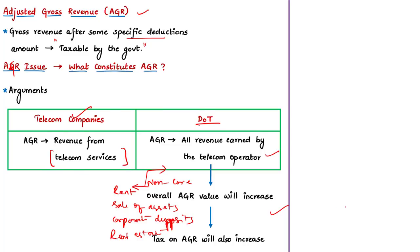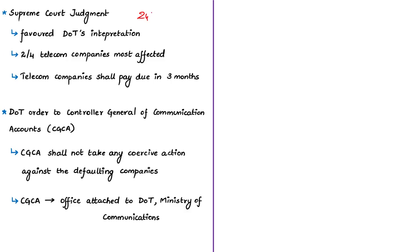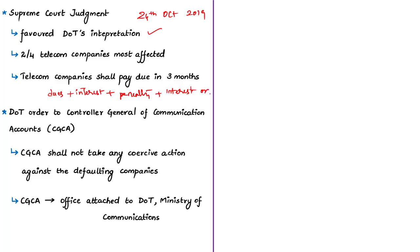The Supreme Court delivered its judgment on 24th October 2019, ruling in favor of the Department of Telecommunications' interpretation of AGR — a huge disadvantage to telecom operators. As per the judgment, telecom companies owe the government the shortfall in AGR for the past 14 years, plus interest on that amount, plus penalty including interest on the penalty. Over this 14-year period, the telecom market in India has shrunk to four major players: Bharti Airtel, Vodafone Idea, Reliance Jio, and state-owned BSNL and MTNL. Bharti Airtel and Vodafone Idea are the most affected.